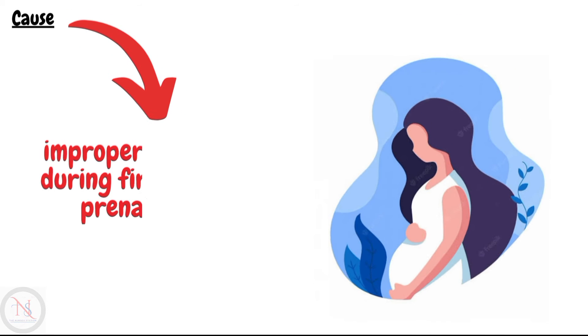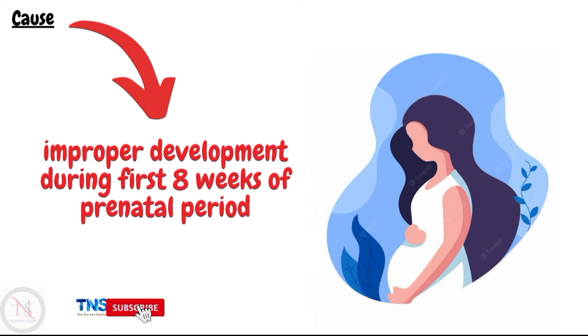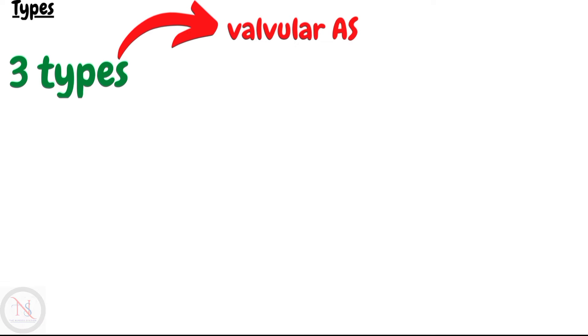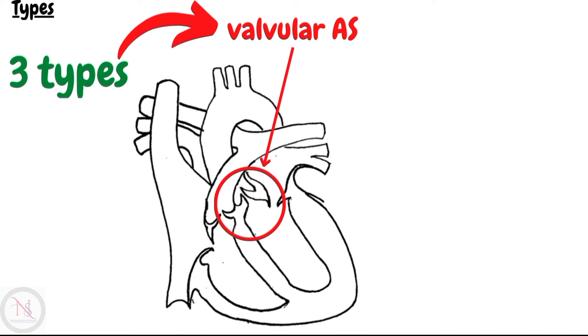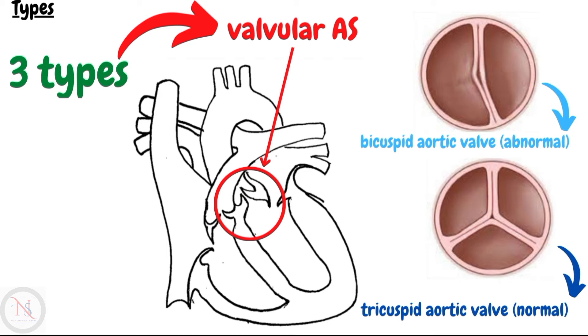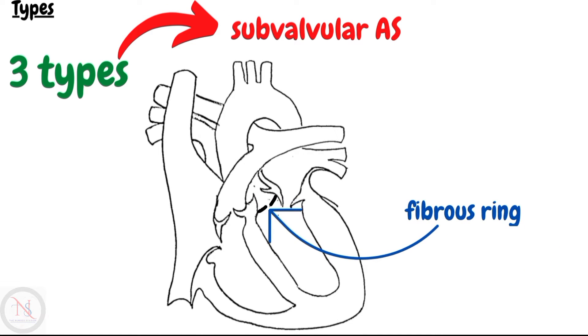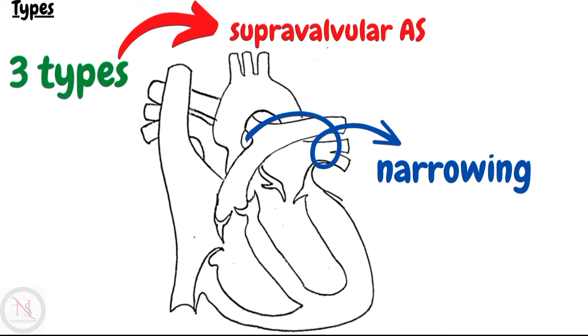Aortic stenosis occurs due to improper development of the aortic valve in the first eight weeks of prenatal growth. There are mainly three types of congenital aortic stenosis. The first is the valvular type, usually caused by malformed cusps or leaflets resulting in a bicuspid rather than tricuspid valve, or fusion of the cusps. Subvalvular stenosis is narrowing caused by a fibrous ring below a normal valve. Supravalvular aortic stenosis is obstruction or narrowing of the aorta just above the aortic valve and is the least common type.